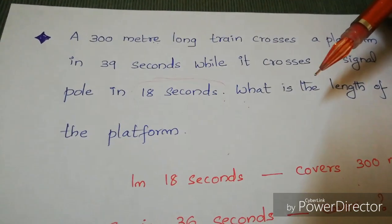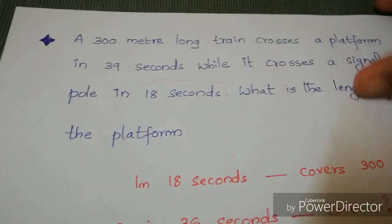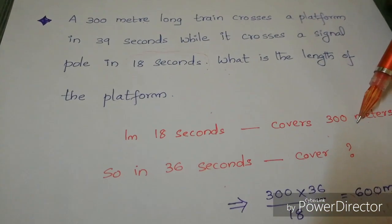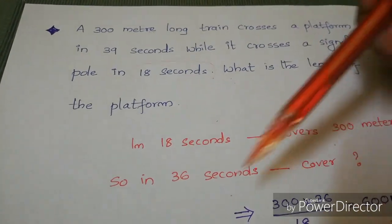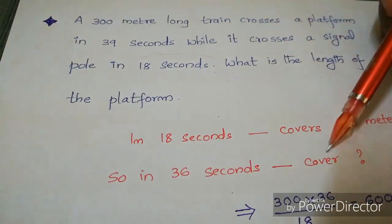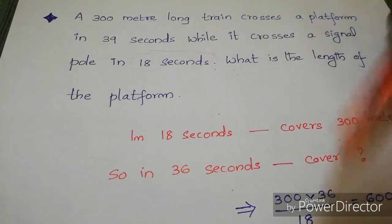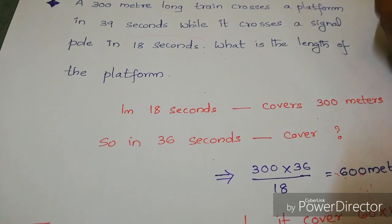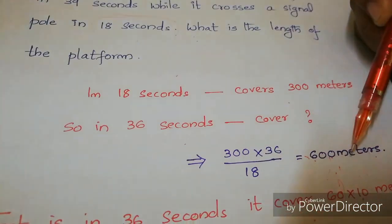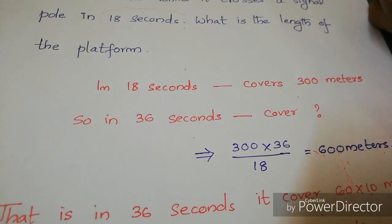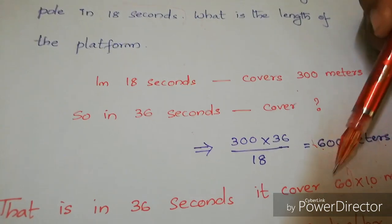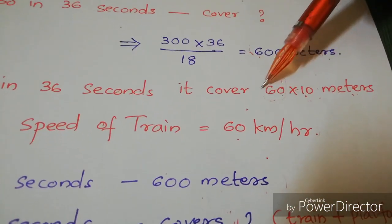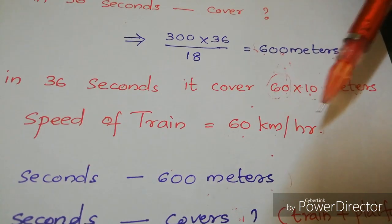In 18 seconds it covers 300 meters (the train length). Cross-multiplying to find what it covers in 36 seconds: 300 × 36 ÷ 18 = 600 meters. So in 36 seconds it covers 600 meters, which means 60 × 10 = 600, so the speed of the train is 60 kilometers per hour.